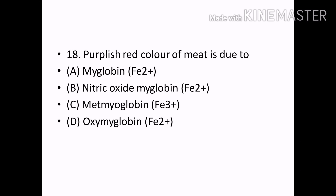The purple-red color of meat is due to: Options — Myoglobin, Nitric Oxide, Met Myoglobin, Oxymyoglobin. Correct answer: Option A — Myoglobin.